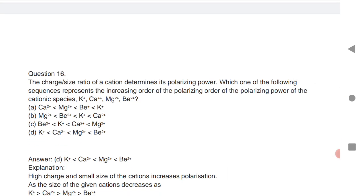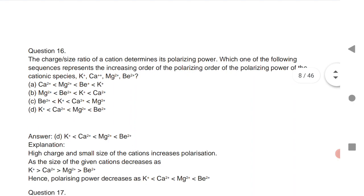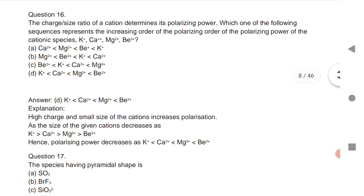The charge-to-size ratio of cations determines its polarizing power. Which of the following sequence represents the increasing order of polarizing power of the cationic species? The increasing power order is first potassium, calcium, magnesium, beryllium.